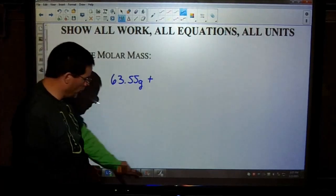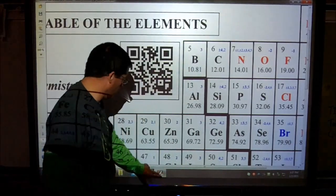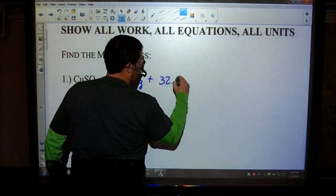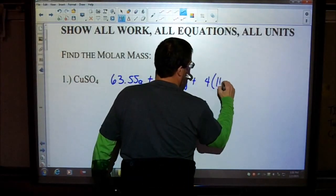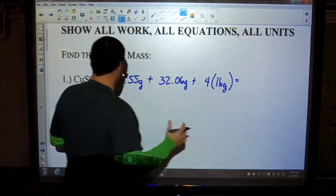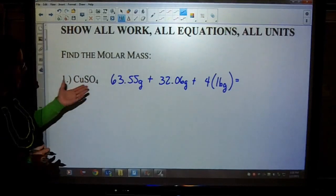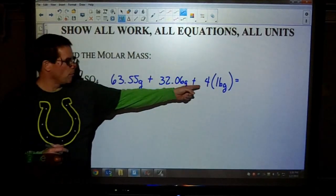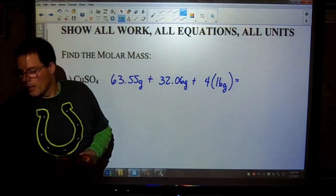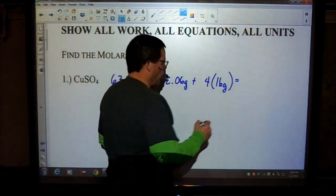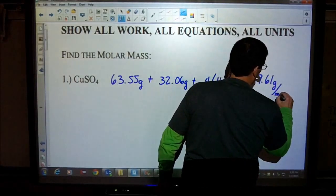We have one sulfur, which is 32.06 grams, and we have four oxygens. When finding the molar masses, simply look at how many you have, then find the molar mass on your periodic table, add all of them up, and in some cases you may need to multiply to get the total mass of that element. In this case, the molar mass is 159.61 grams per mole.